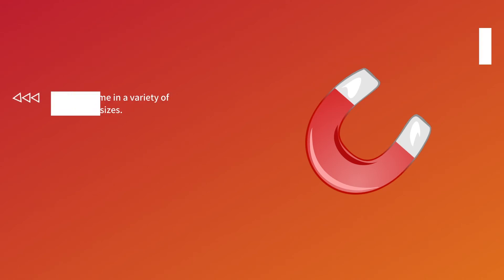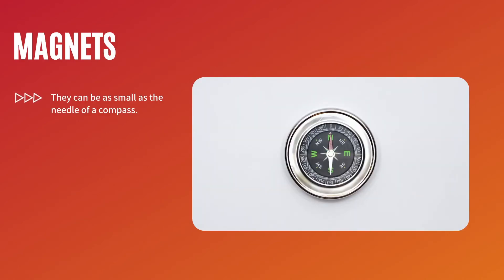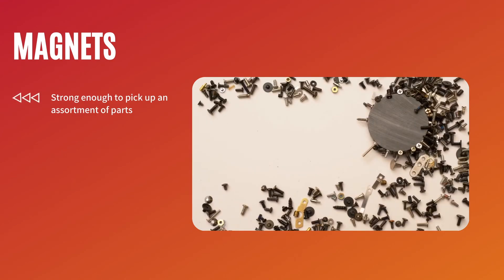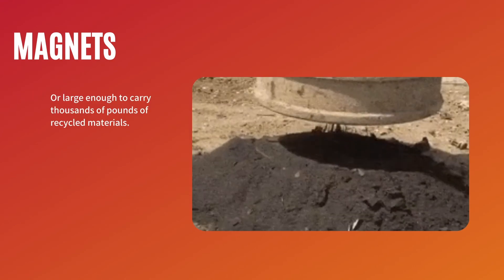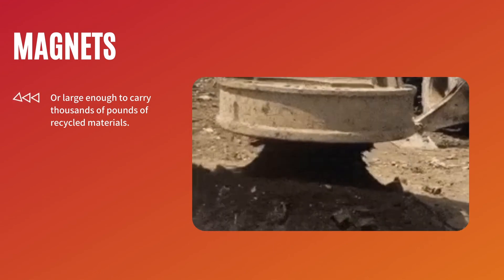Magnets come in a variety of shapes and sizes. They can be as small as the needle of a compass, strong enough to pick up an assortment of metal parts, and large enough to carry thousands of pounds of recycled materials.